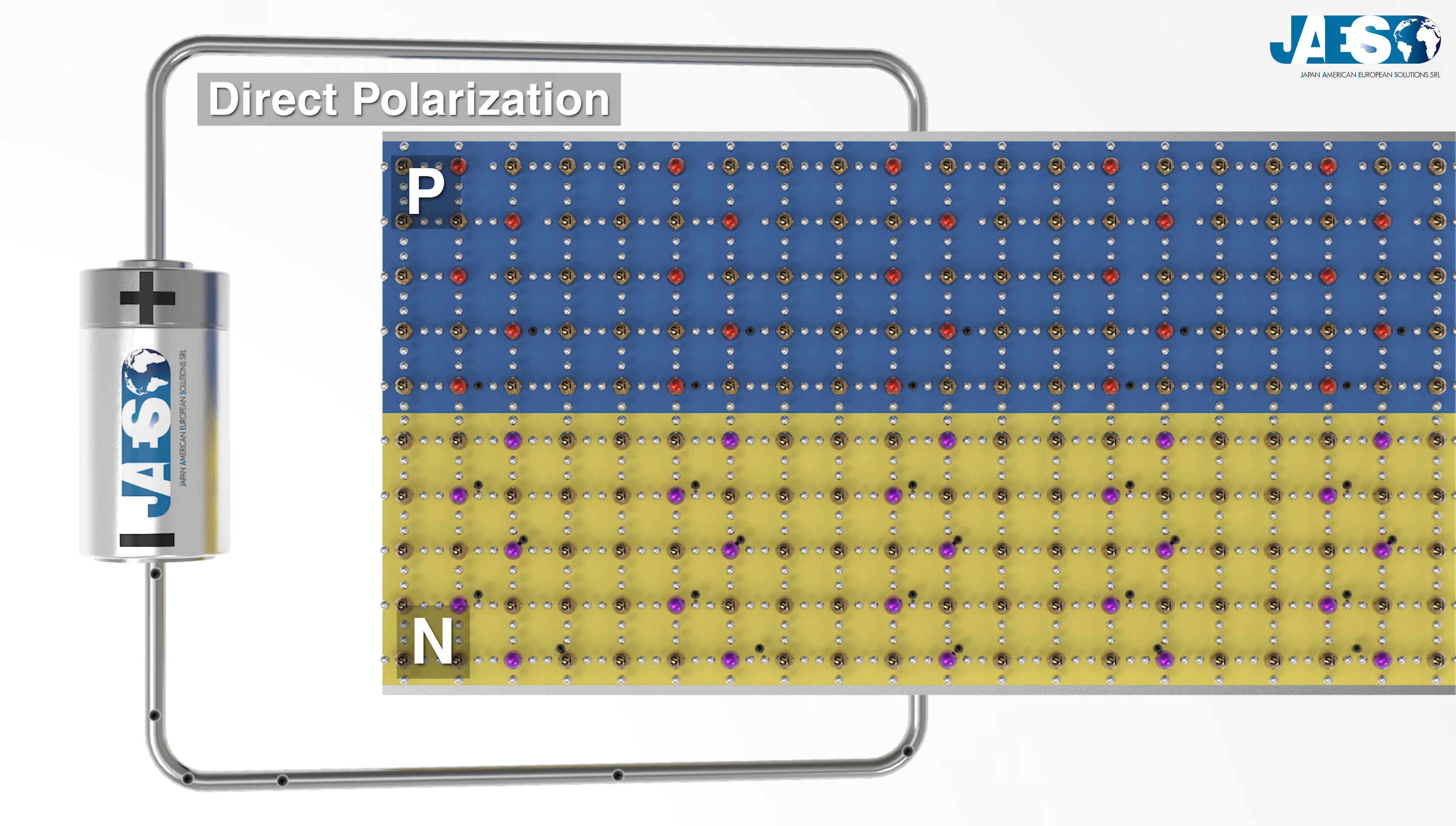We can see the movements of new electrons inside the N layer and the free electrons going through the depletion region, filling the holes of the P layer and then continue to close the circuit.